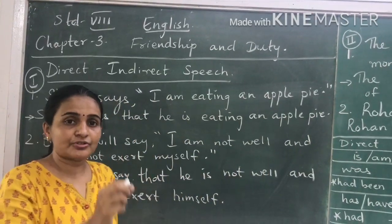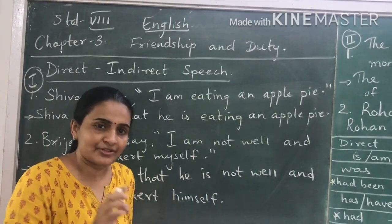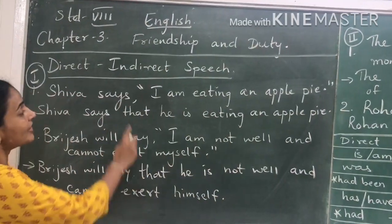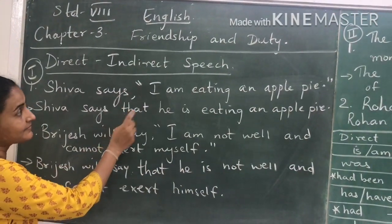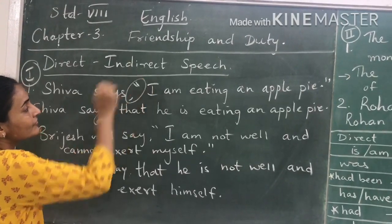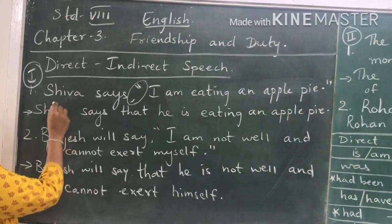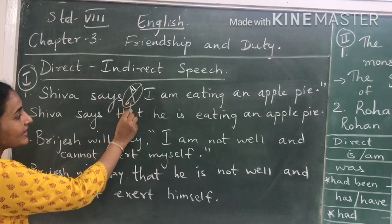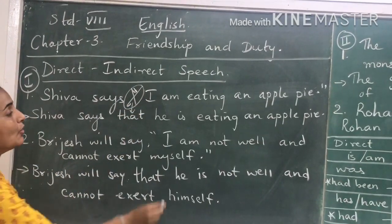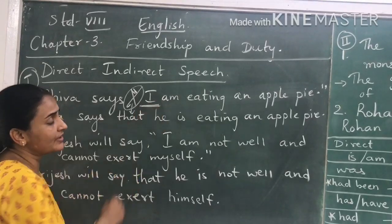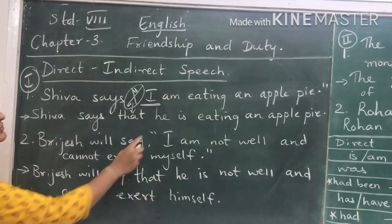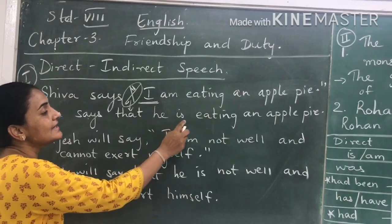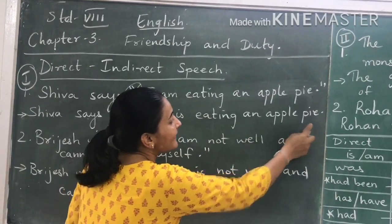Whatever the punctuation — full stop, question mark, or exclamation — these three can be there at the end of the sentence, and then the close inverted. Now when you change it to indirect, we have to remove this part. So Shiva says — now instead of the comma and open inverted, we write 'that'. Who is 'I' over here? I is Shiva, so we will write 'he'. 'Am' is present tense, so we write: he is eating an apple pie.